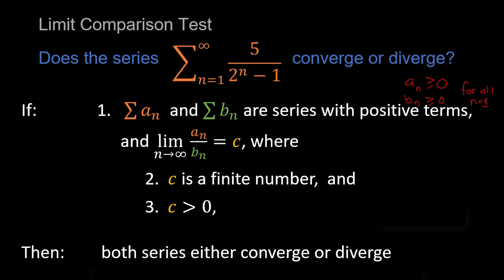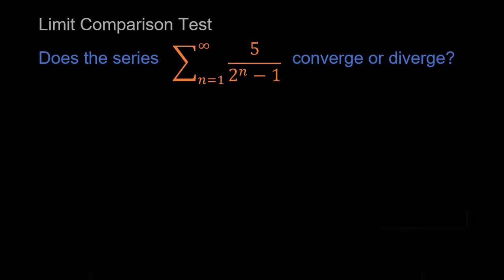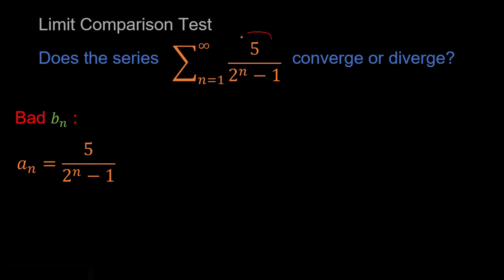Having defined the limit comparison test, let's go ahead and apply it. Before I show you the correct way, I want to show a wrong way — just to illustrate why it's important to choose an appropriate b sub n term. So let's show this process using a bad b sub n. Our a sub n is already chosen: 5 over 2 to the n minus 1. We're going to choose poorly and call b sub n one over 3 to the n.